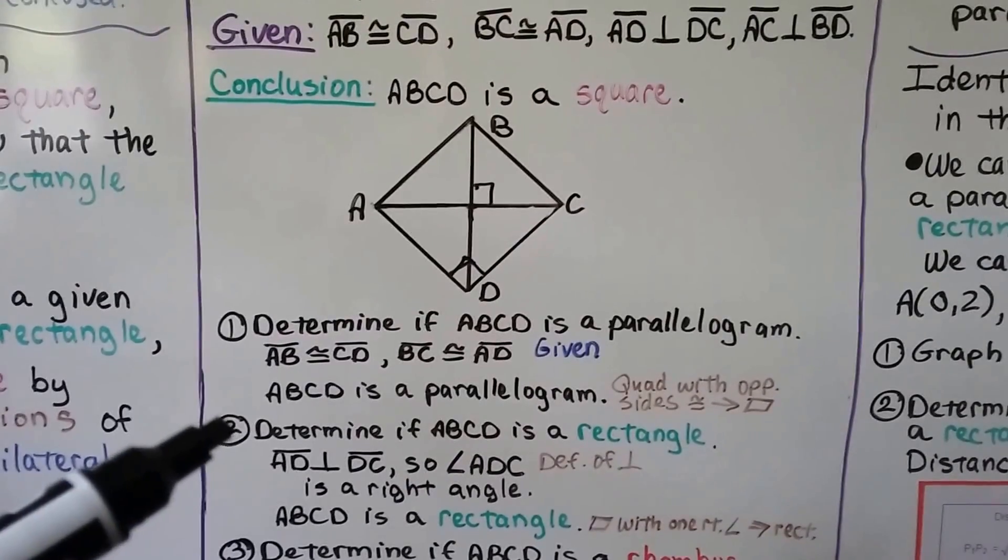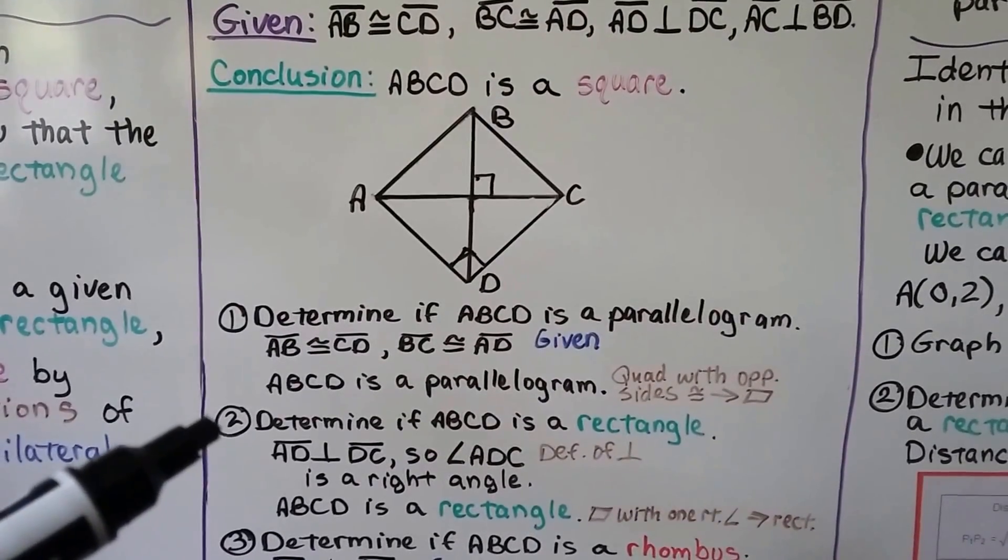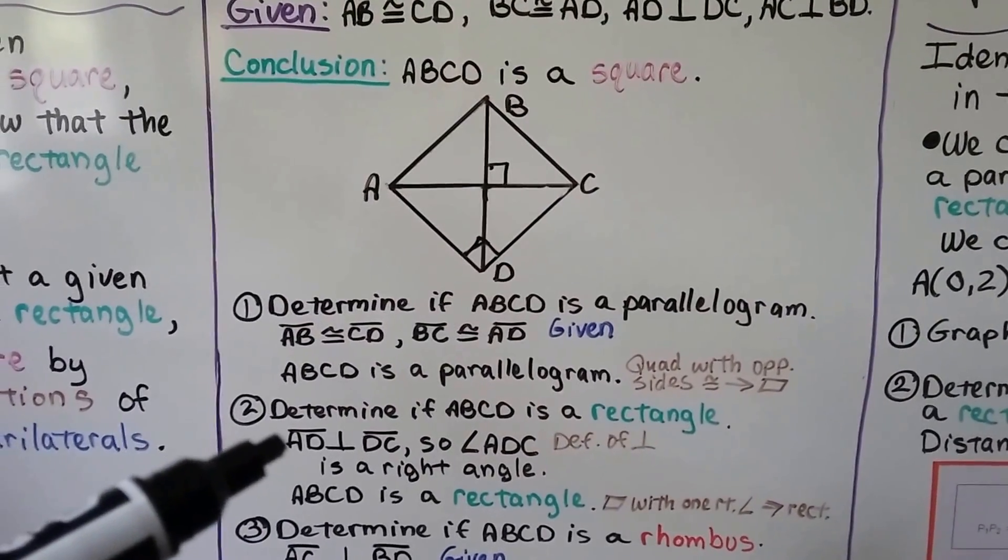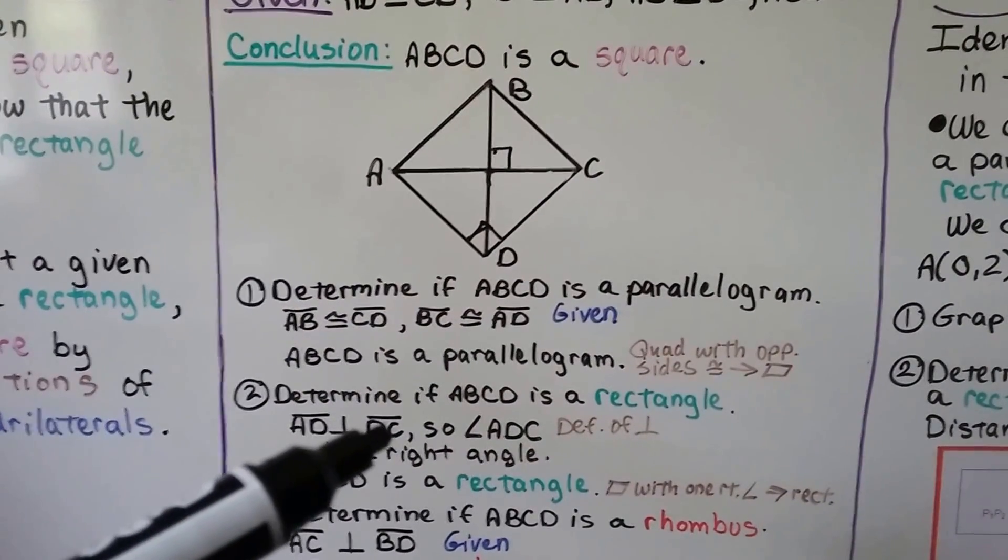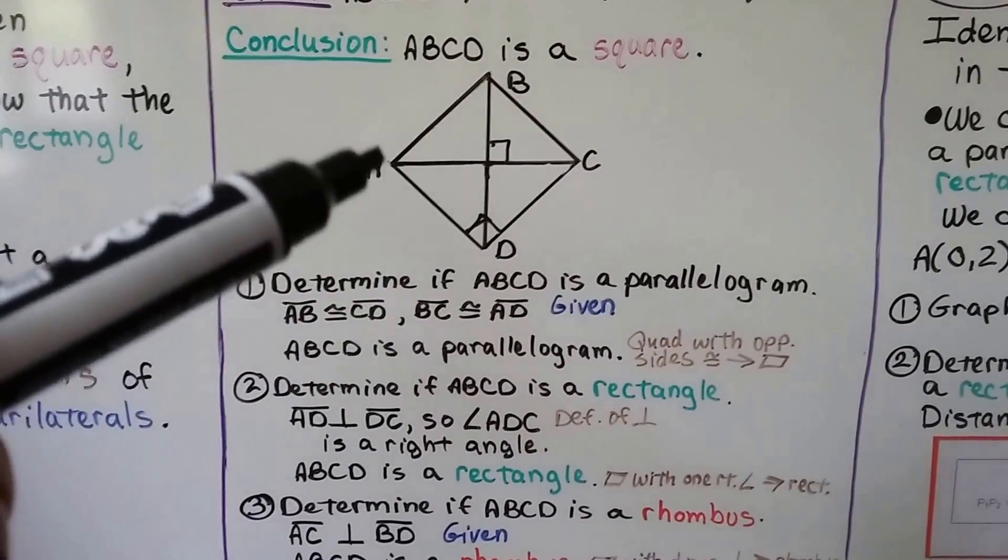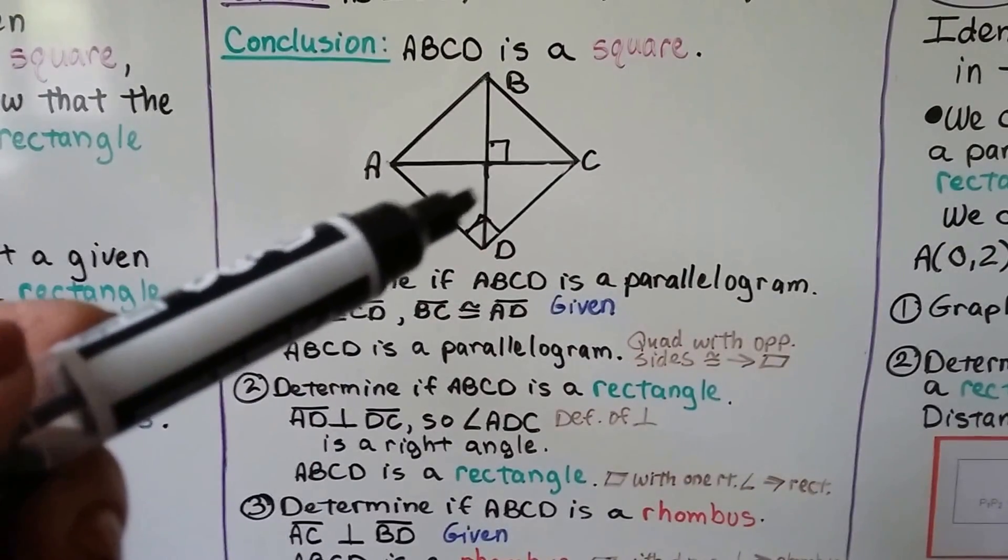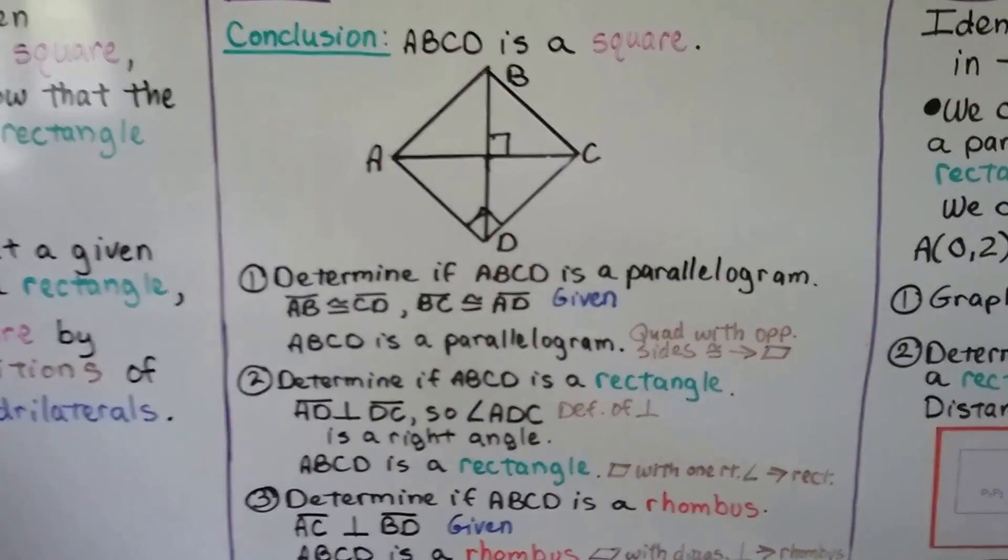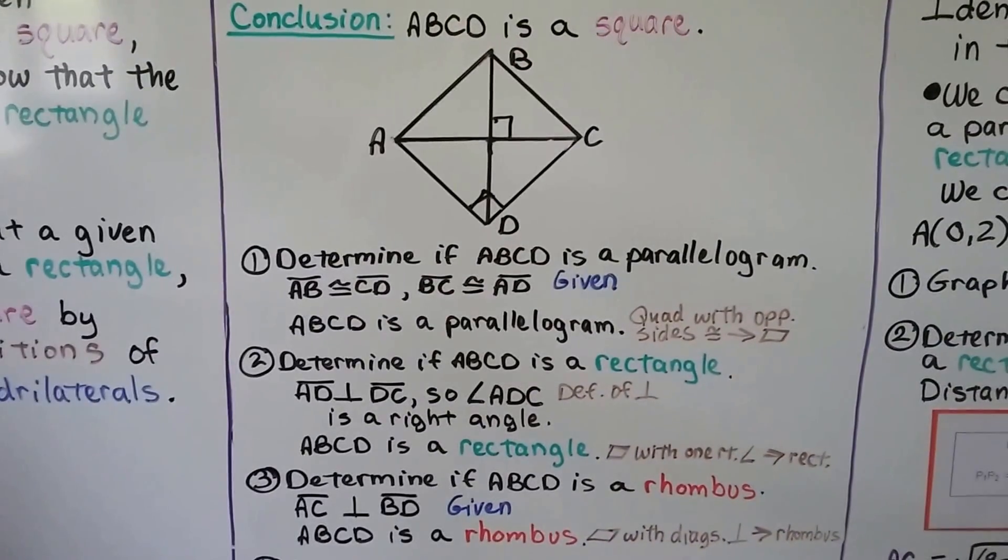Now the second thing we need to do is determine if ABCD is a rectangle. Well, it said that segment AD was perpendicular to segment DC. We got that right there. So angle ADC is a right angle. That's the definition of perpendicular.